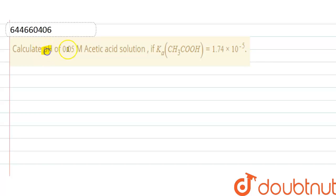Calculate pH of 0.05 molar acetic acid solution if the acid dissociation constant is 1.74 × 10^-5.